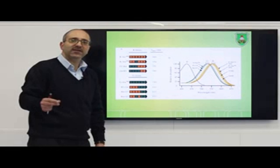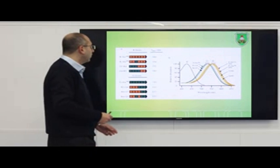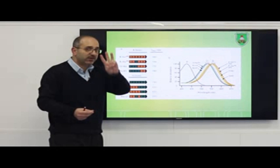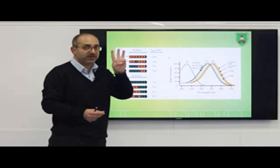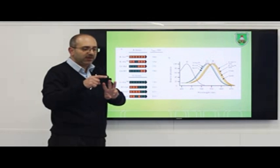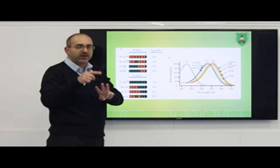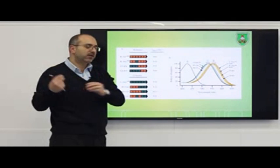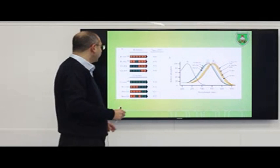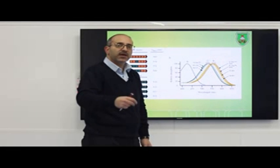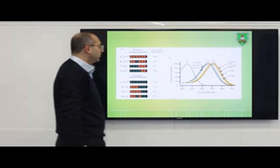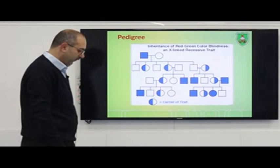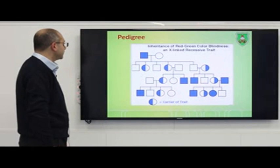Individual differences in color vision also arise from polymorphisms within the genes — particularly the three key amino acids: tyrosine, serine, and threonine that differ between red and green opsin. These polymorphisms and different types of recombination account for the range of individual differences in the ability to see colors.